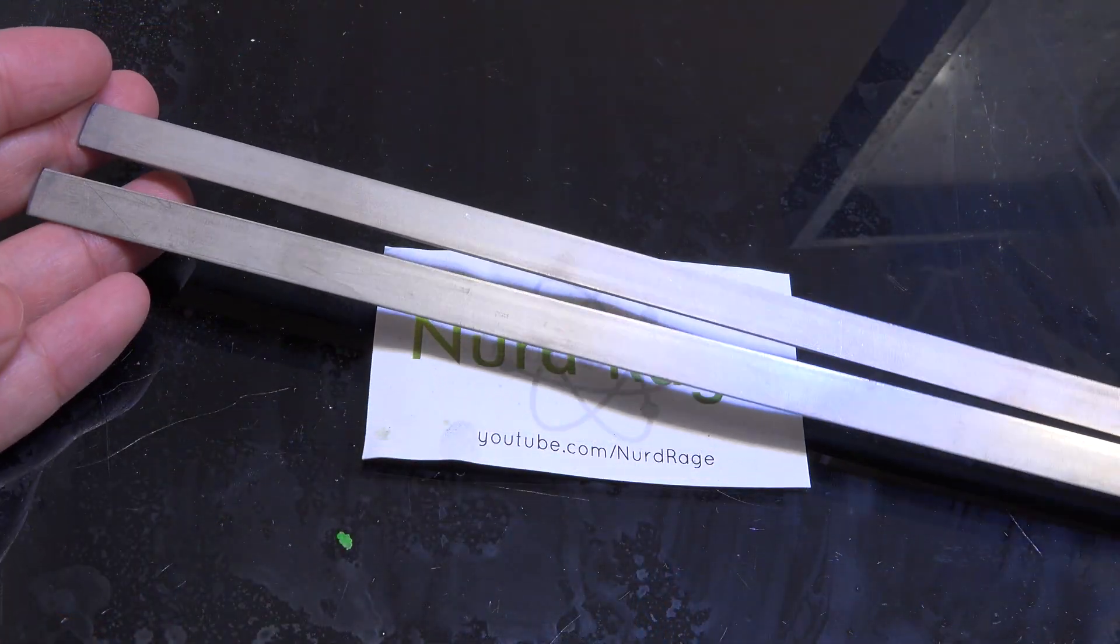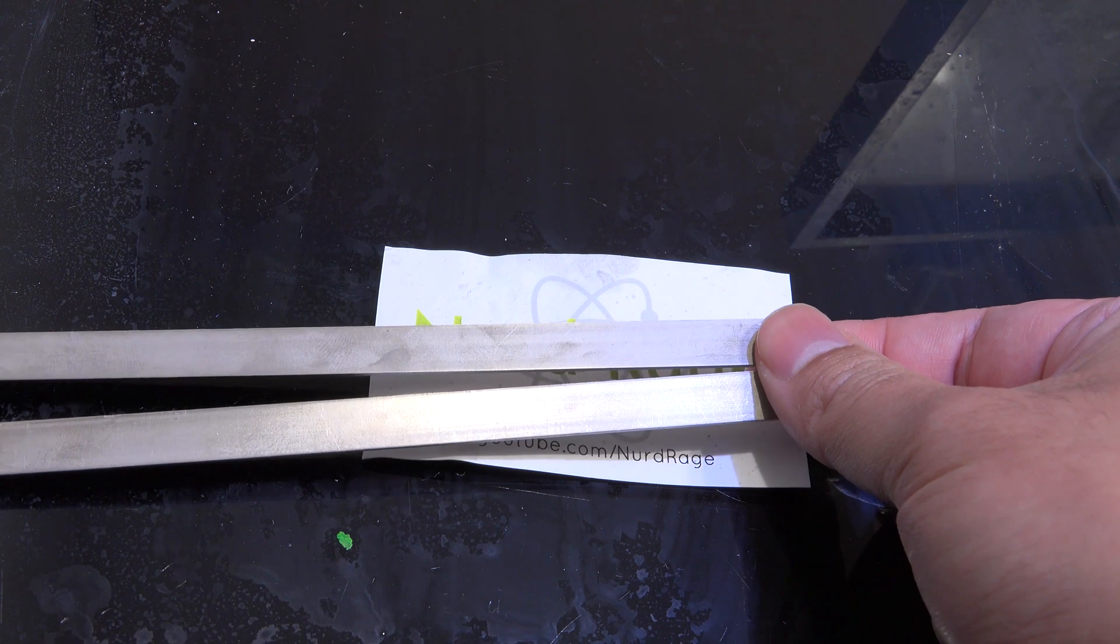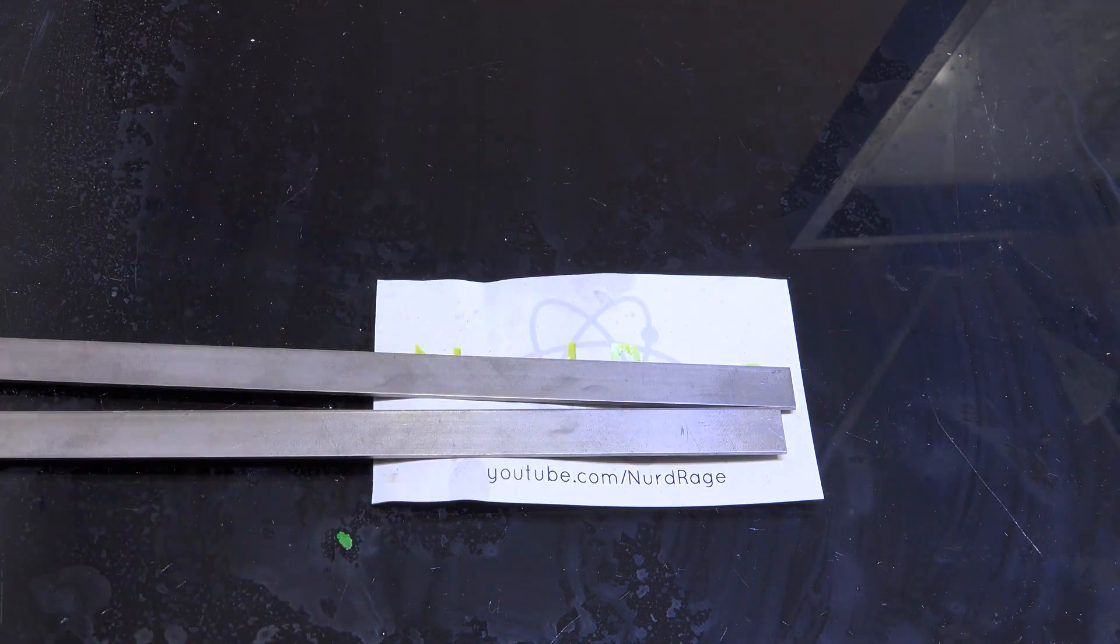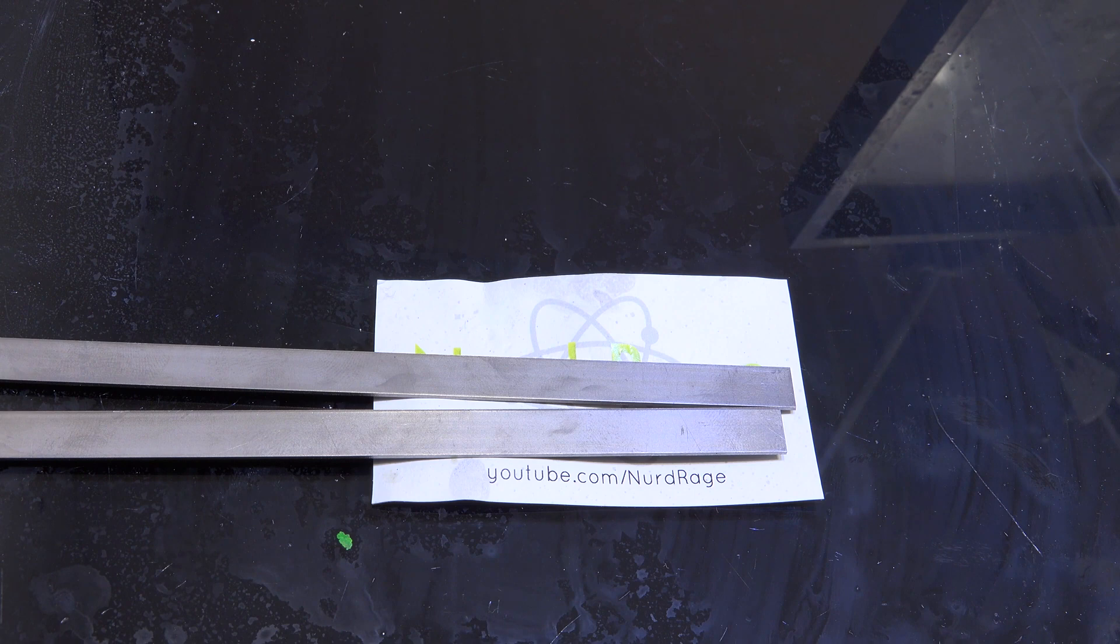First we're going to need some titanium rods or strips. We're using titanium as a conductor to save on the expensive platinum. Titanium is inert to most chemicals except concentrated acids so it usually won't interfere with our chemistry.